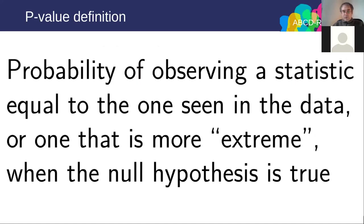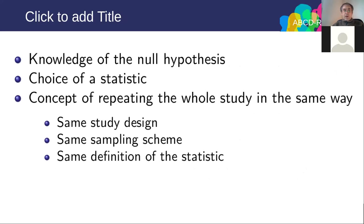The p-value is defined as the probability of observing a statistic equal to or more extreme than the one seen in the data when the null hypothesis is true. It is a probability not on the hypothesis but on observing a statistic — a function of the data. It requires knowledge of the null and the choice of statistics. You must think of the concept of repeating the whole study in the same way — sampling the same subjects under the same conditions over and over — which is what the p-value is giving you in the long run.